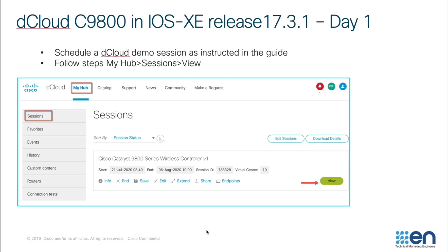After you get started with dCloud and go through the process to schedule your session, you will be given a specific time for when the session will start. In our example, the session starts on July 21st and ends on August 6th. You can schedule for an immediate start, or schedule to start on a later date after you review the manuals. After logging in, go to the tab My Hub shown here, and then click the View icon.